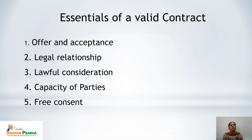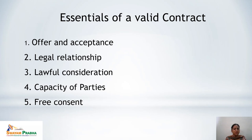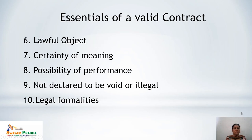Now we come to the essentials of a valid contract. Section 10 of the Indian Contract Act 1872 provides various points which make a contract valid. These include: offer and acceptance, legal relationship, lawful consideration, capacity of parties, free consent, lawful object, certainty of meaning, possibility of performance, not declared void or illegal, and legal formalities.